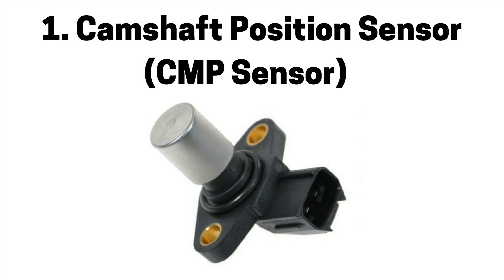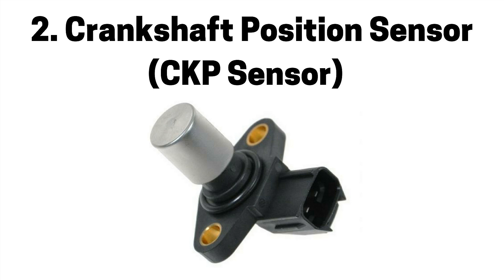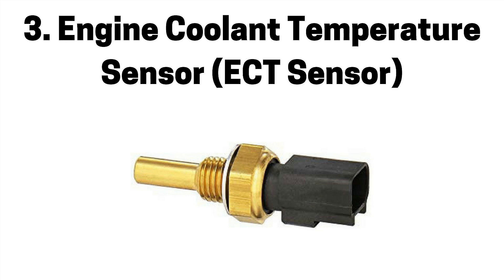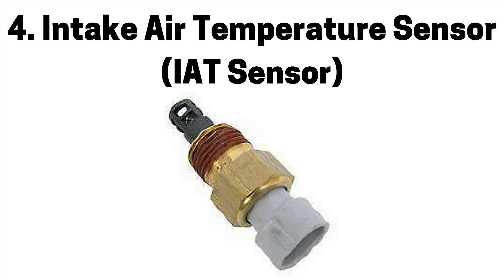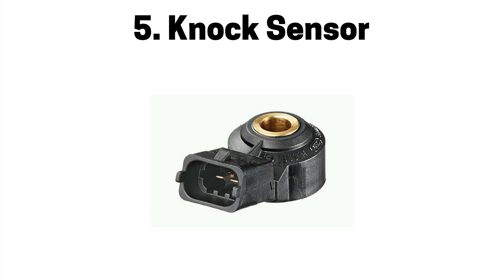Next pertains to ECM sensor systems. Number one is a faulty camshaft position sensor, also referred to as a CMP sensor, which can cause engine misfire and a check engine light. Number two is a faulty crankshaft position sensor, also referred to as a CKP sensor, which can cause engine misfire and a check engine light. Number three is a faulty engine coolant temperature sensor, also referred to as an ECT sensor, which can cause a rich or lean air fuel mixture, engine misfire, and a check engine light. Number four is a faulty intake air temperature sensor, also referred to as an IAT sensor, which can cause a rich or lean air fuel mixture, engine misfire, and a check engine light. Number five is a faulty NOx sensor, which can cause engine misfire and a check engine light.